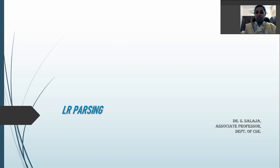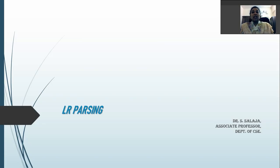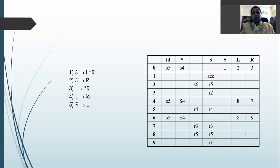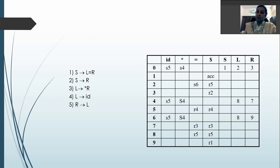Today we will discuss the LR parsing process. We are going to parse any given string, provided we have an LR parsing table. This table is obtained from the context-free grammar based on any one of the LR parsing techniques, namely SLR, CLR, or LALR. For all three parsing techniques, the parsing process for a given input is going to be the same.